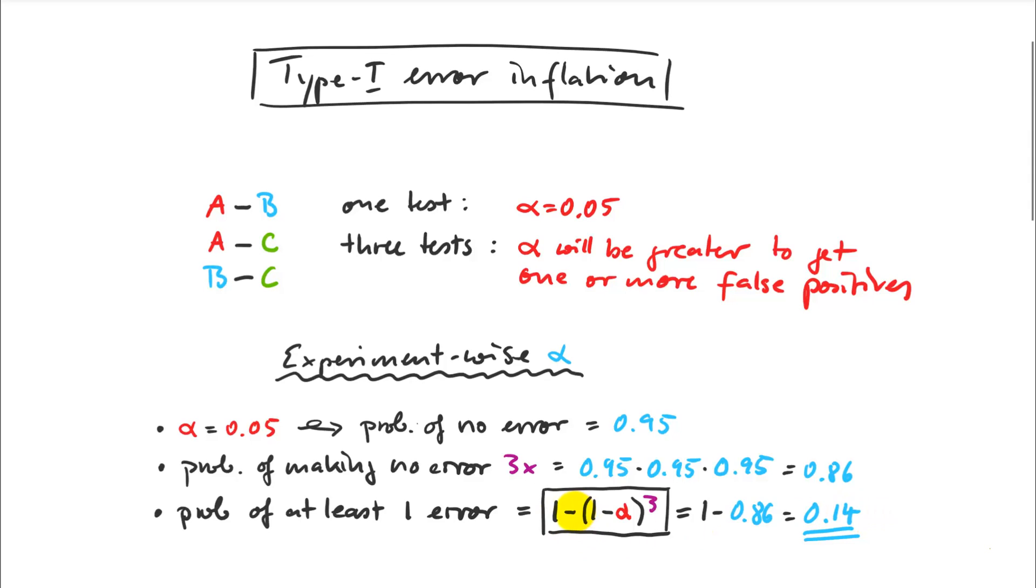So that's a cool calculation. It works with the 0.95, this is 1 minus alpha. I multiply this value as many times as I do the comparison, to the power of 3 in this case. And then 1 minus all that is my probability of making at least one error.